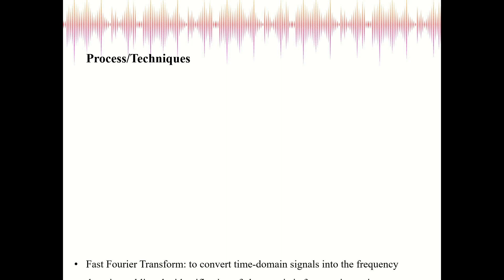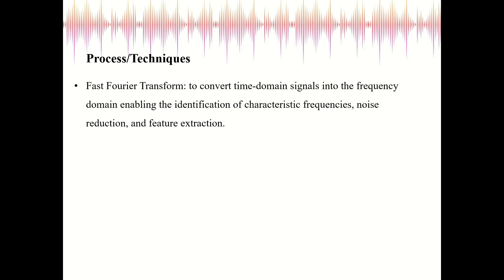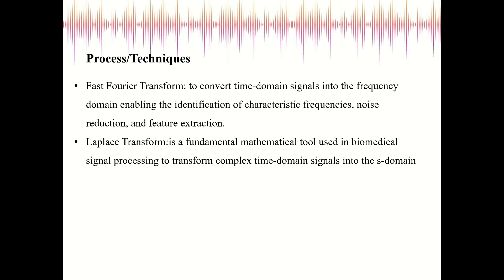Next we have the processing techniques. First we have the Fourier—fast Fourier transform. It is a technique used to convert time domain signals into the frequency domain, enabling the identification of characteristic frequencies, noise reduction, and feature extraction. Next we have Laplace transform. This is a fundamental mathematical tool used in biomedical signal processing to transform complex time domain signals into the S-domain.